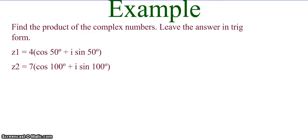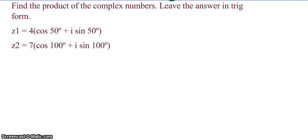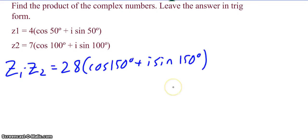Using that, find the product of the complex numbers — leave the answer in trig form and in degrees since the problem is given in degrees. Pause the video and unpause when you're ready to check your work. Hopefully this did not take you very long: 4 times 7 is 28, 50 plus 100 is 150, and then we just rewrite it. That's it.